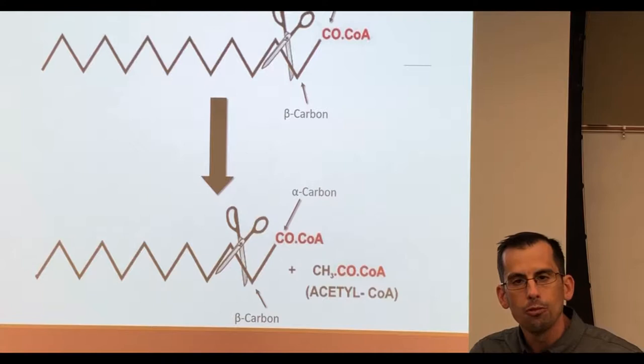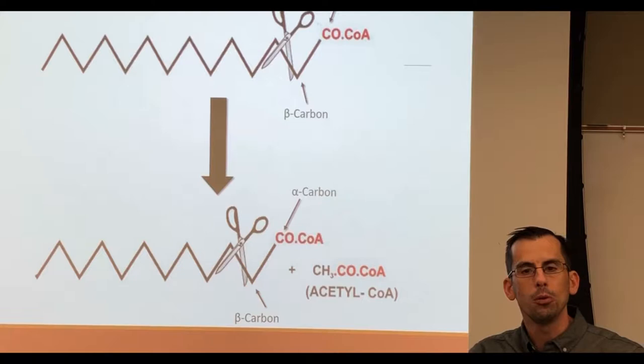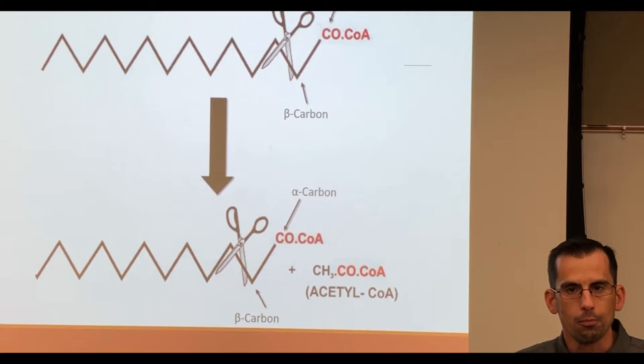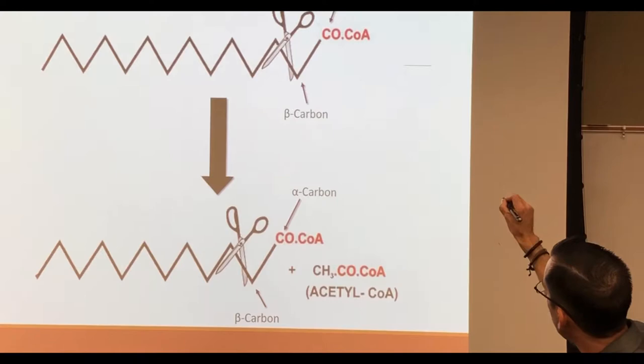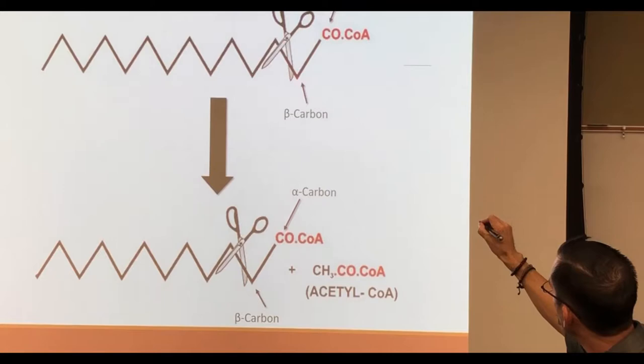Beta-oxidation, the term itself, describes the location at which we cut these long chains. We cut them into subunits which we can put into the rest of our processes for ATP production. Here's our carboxyl ending. The first carbon after it is the alpha carbon. This carbon at this point is our beta carbon.